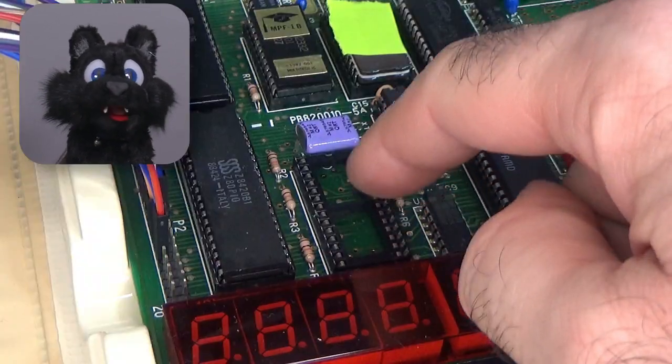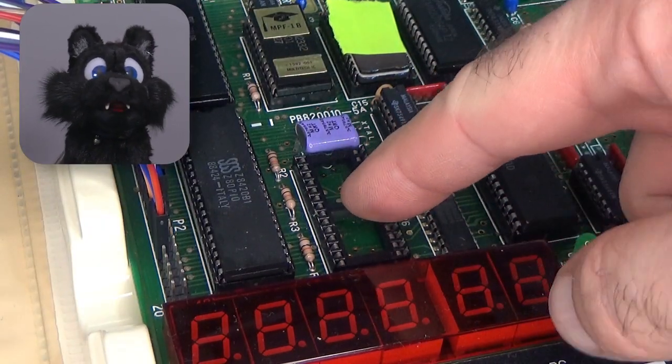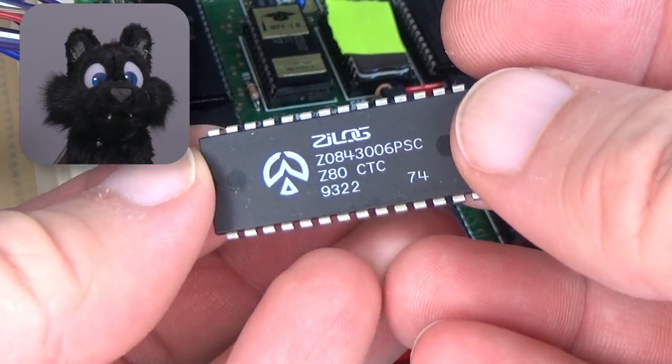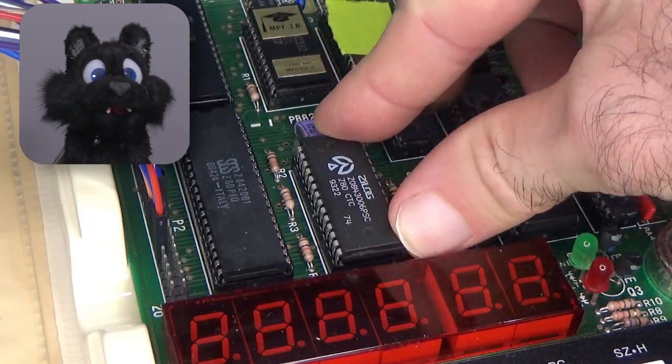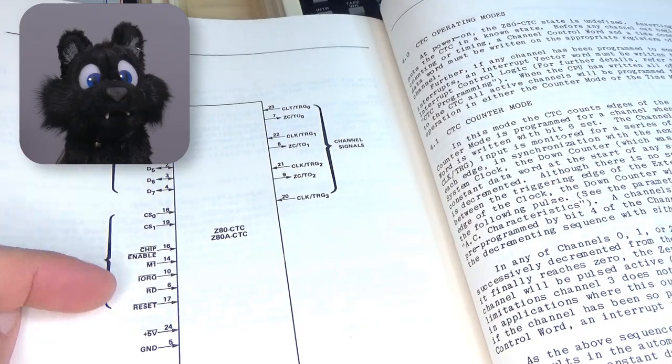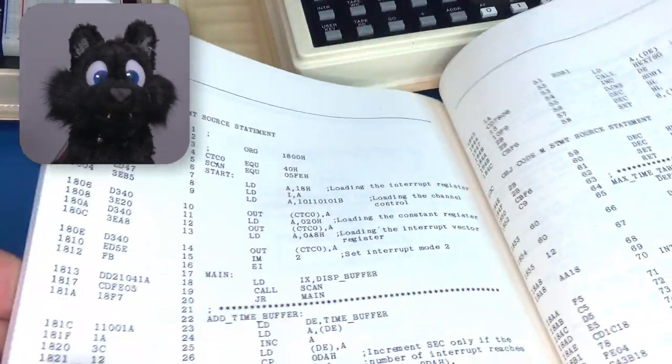The MPF1 has a socket for a Z80 CTC, a programmable timer. It was an optional feature, but I have one of these in my stash. The experiment manual that came with the board has a simple clock program that goes with it.